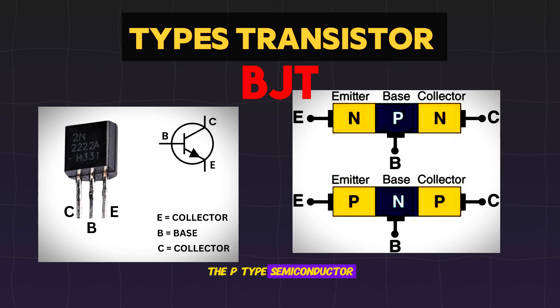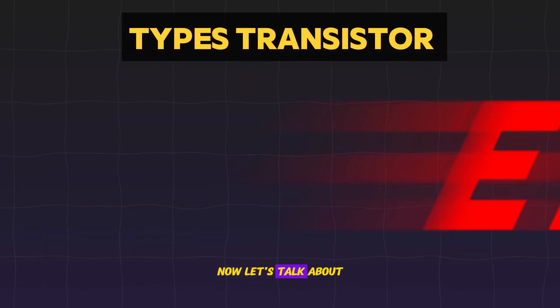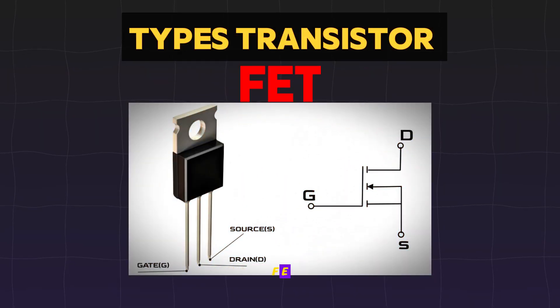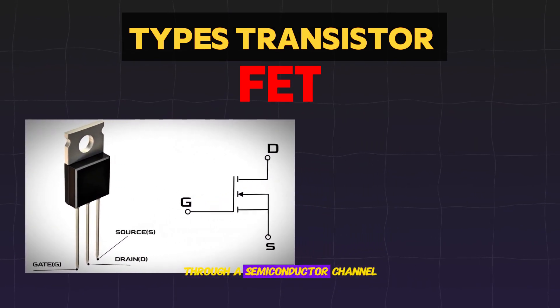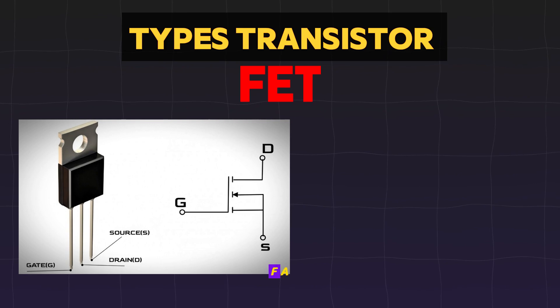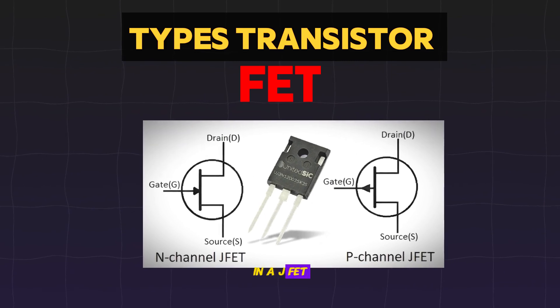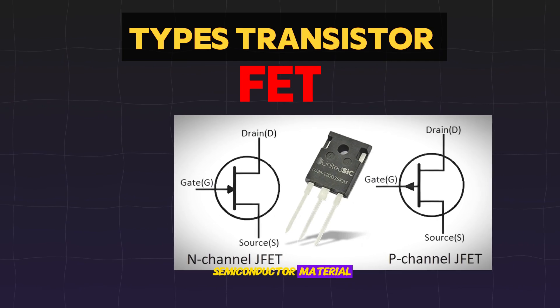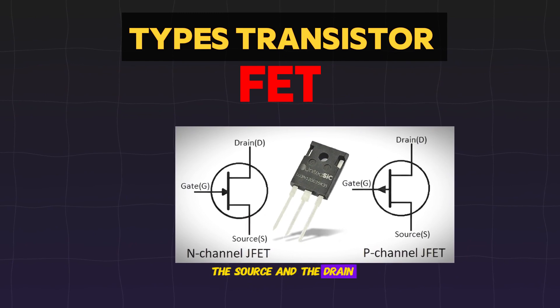Now that you understand what BJT is and its types, let's talk about field effect transistors, known as FETs. A field effect transistor, FET, is a type of transistor that uses an electric field to control the current flow through a semiconductor channel. FET has two types. The first is junction field effect transistor, JFET. In a JFET, the channel consists of semiconductor material and has two regions at each end, known as the source and the drain terminals.